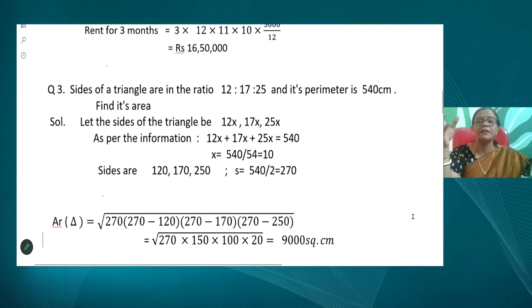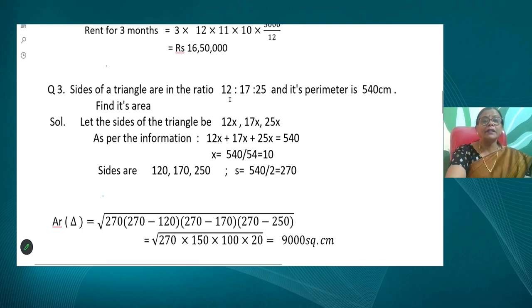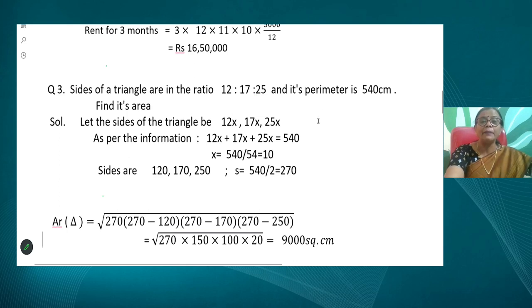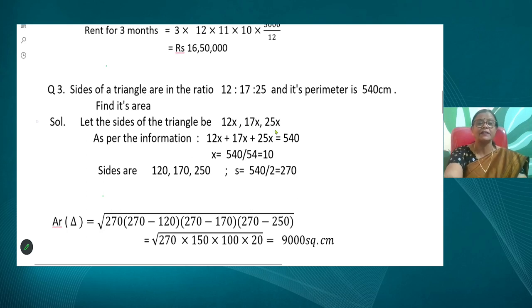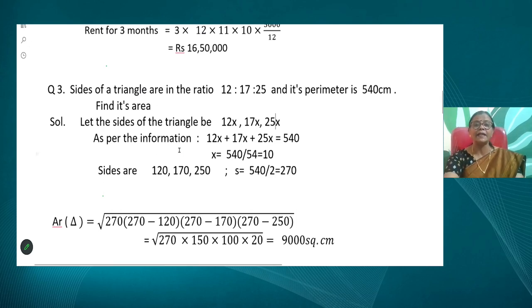The third question is based on ratios of sides — the sides are in the ratio 12:17:25 and the perimeter is 540. First we find the length of the sides. Let the sides be 12x, 17x, and 25x. The perimeter condition gives 12x + 17x + 25x = 540, so 54x = 540, meaning x = 10. Therefore the sides measure 120, 170, and 250.